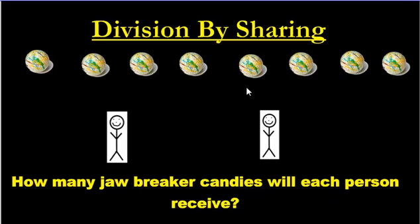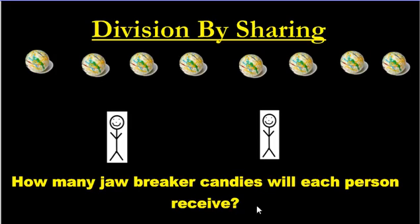So that rule — you need to understand it. You have to give everybody the same amount. Now we have a problem here. We have some jawbreakers — remember those candy jawbreakers — and we've got two people who want to share them. How many jawbreakers will each person receive?